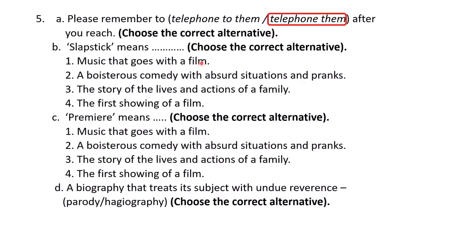'Slapstick' — the options are: music that goes with the film; a boisterous comedy with absurd situations and pranks; story of the lives and actions of a family; the first showing of a film. The answer is: a boisterous comedy with absurd situations and pranks is called slapstick. This is from the film vocabulary.